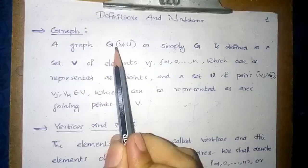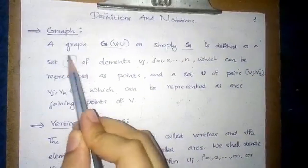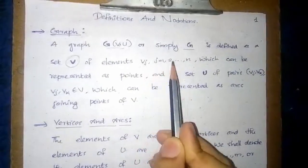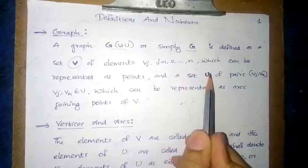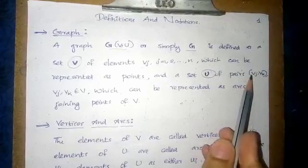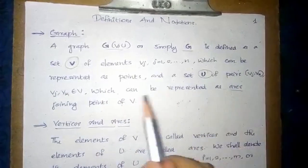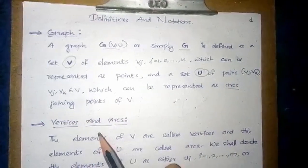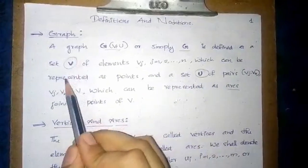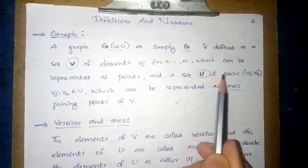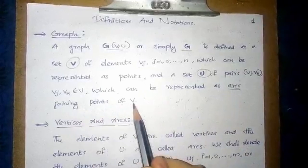A graph G(V,U), or simply G, is defined as a set V of elements Vj where j = 1, 2, ..., n, which can be represented as points, and a set U of pairs ordered by (Vj, Vk) where Vj, Vk belong to V, which can be represented as arcs joining points of V. So a graph mainly consists of two sets V and U.